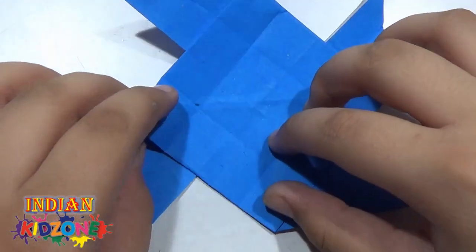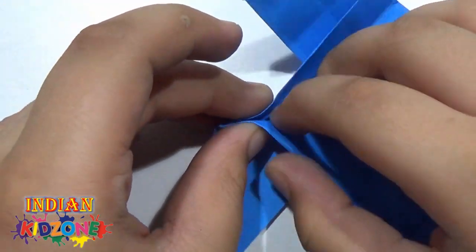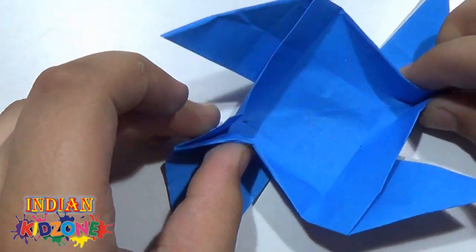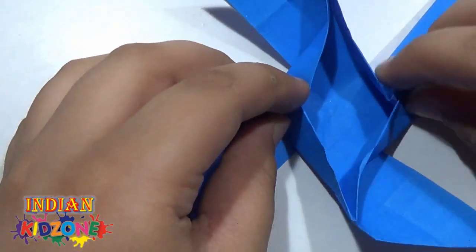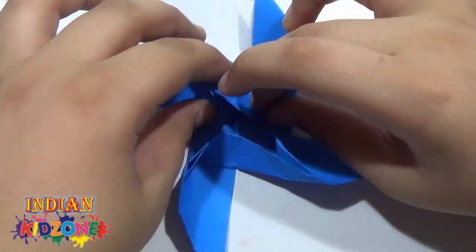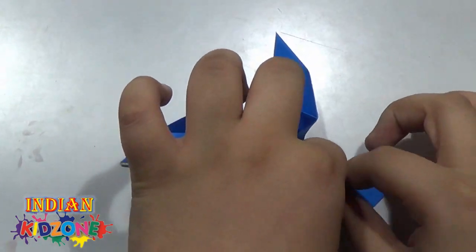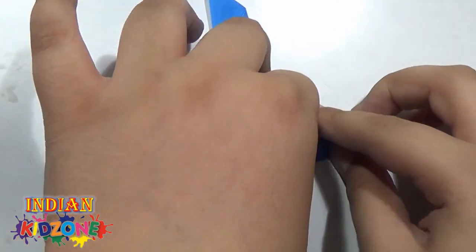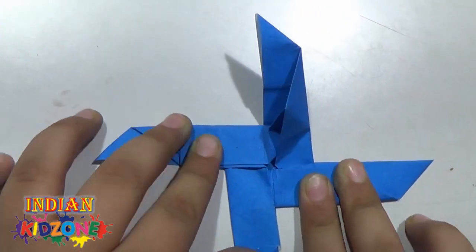Now we have to pinch both on this edge. Like this. Same with it. Pinch it properly. Pinch it. Pinch it properly and then we will crease it. Like this. Like this.